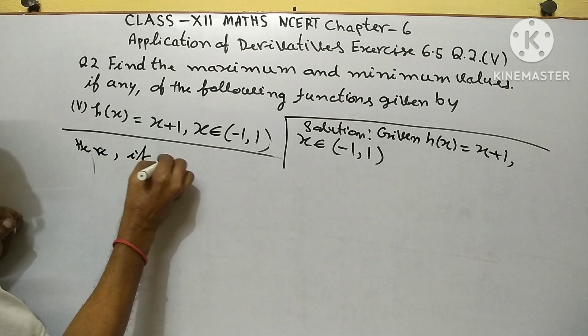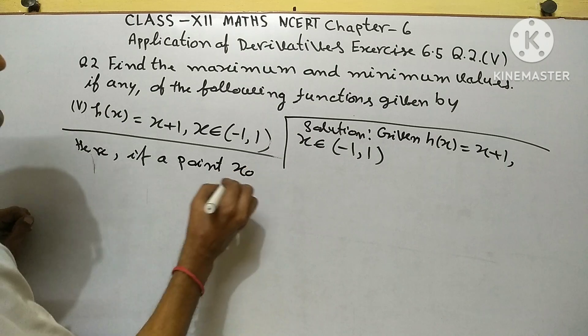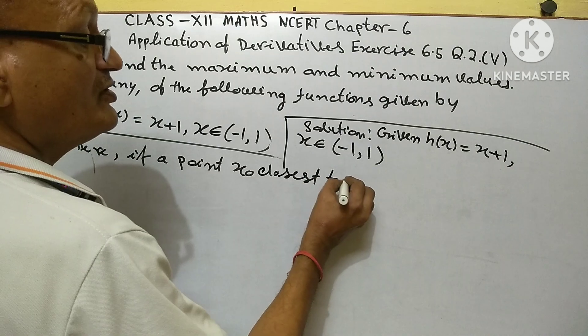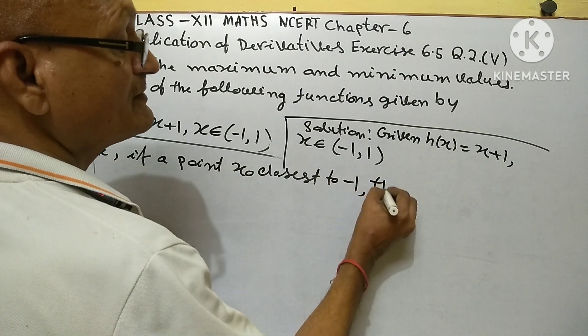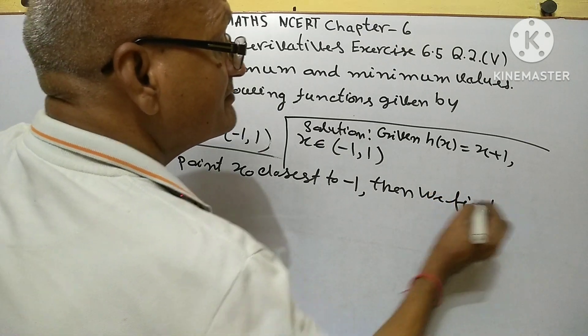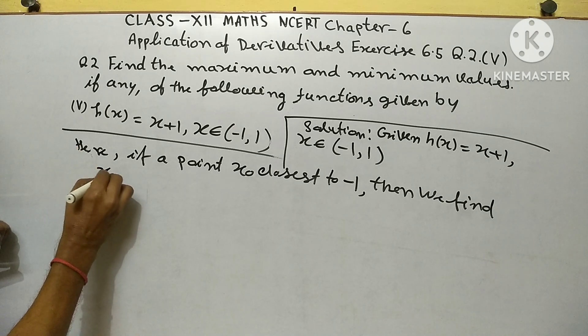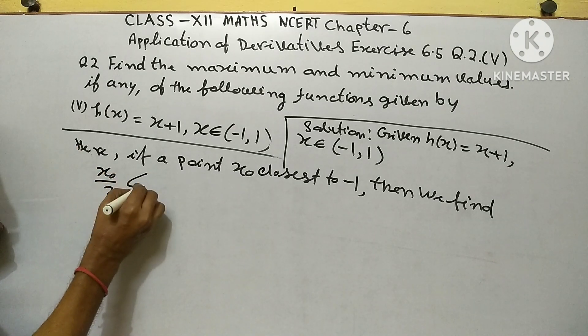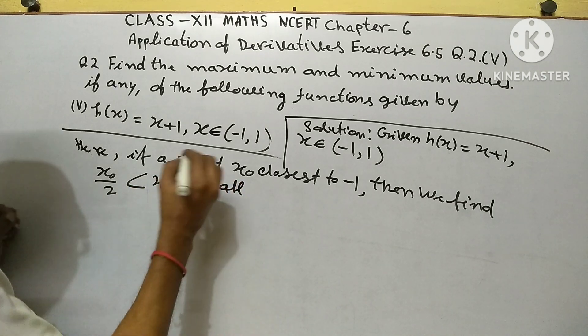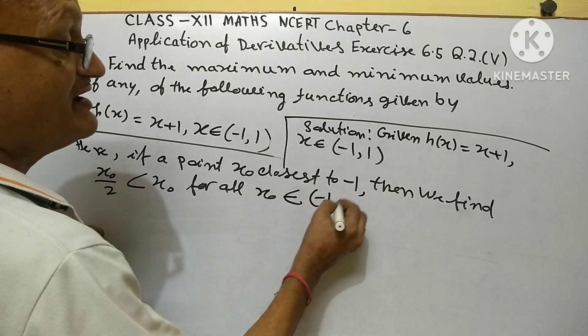Here, if a point x_0 is closest to minus 1, then we find x_0 over 2 is less than x_0 for all x_0 belonging to the interval minus 1, 1.